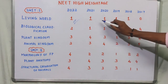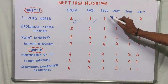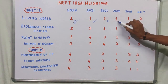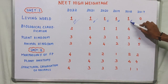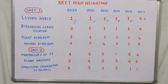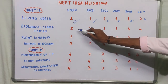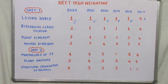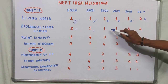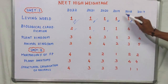Let's look at the question frequency data. Questions are categorized as one per year, two per year, or no questions per year by group. In 2020, one question came from Plant Kingdom. The Plant Kingdom chapter is basically covered in Unit 1.